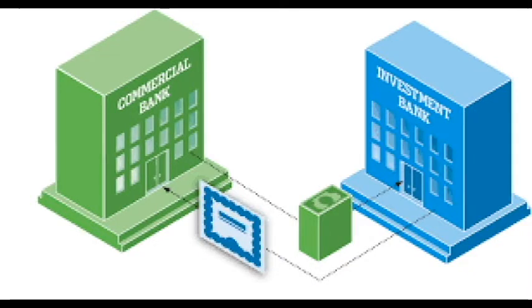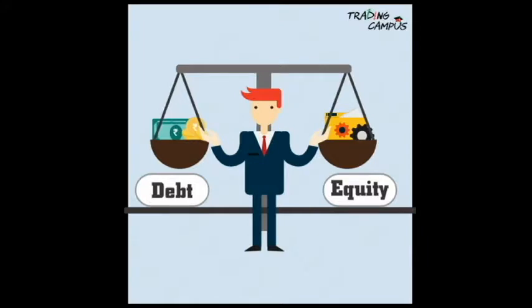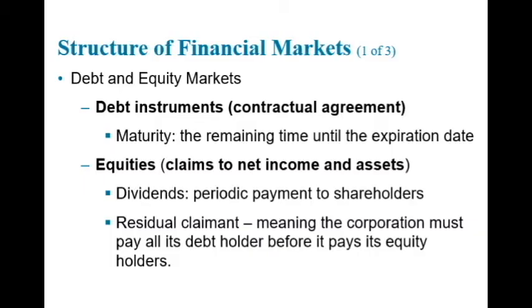A firm or an individual can obtain funds in a financial market in two ways. The most common method is to issue a debt instrument, such as a bond or a mortgage, which is a contractual agreement by the borrower to pay the holder of the instrument fixed peso amounts at regular intervals, together with its interest and principal payments, until a specified date, called the maturity date, when the final payment is made.